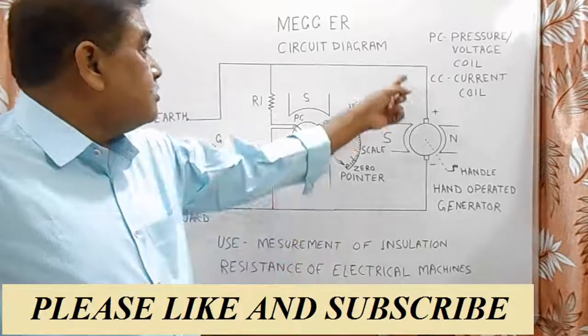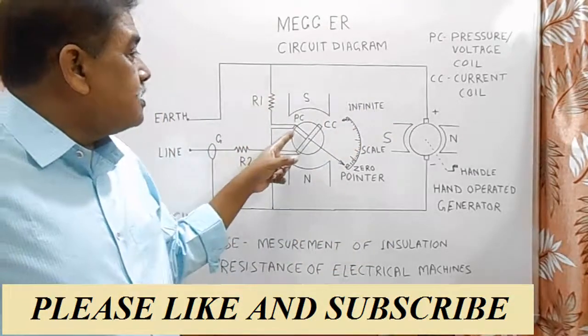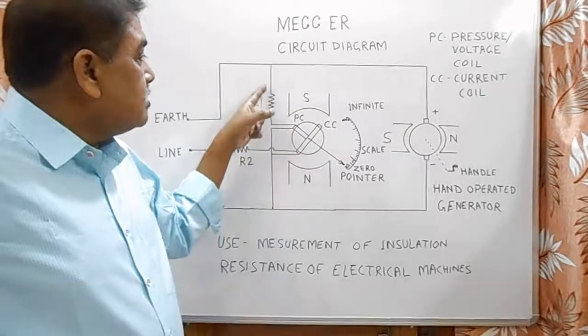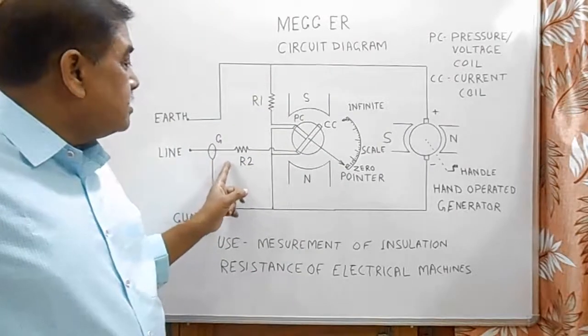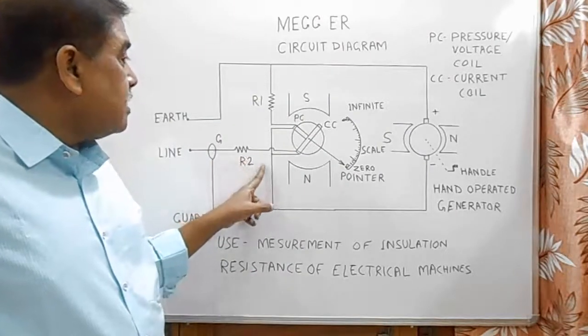This negative and positive voltage comes through this line. Here is the pressure coil, it is connected through a resistance R1 and neutral side goes directly. And current coil is having a resistance R2.